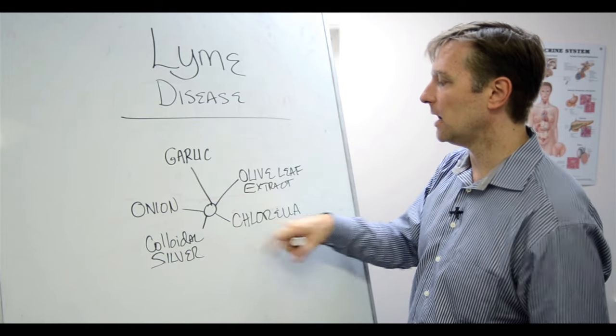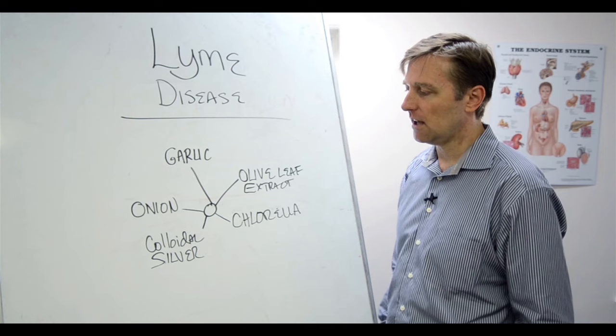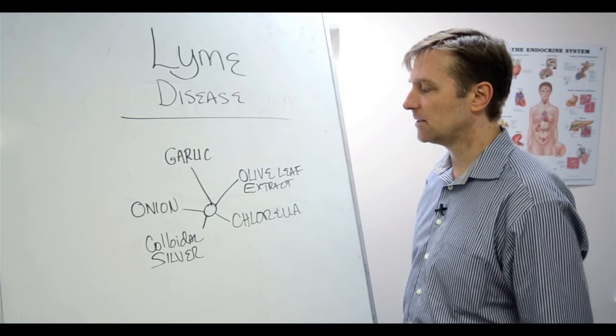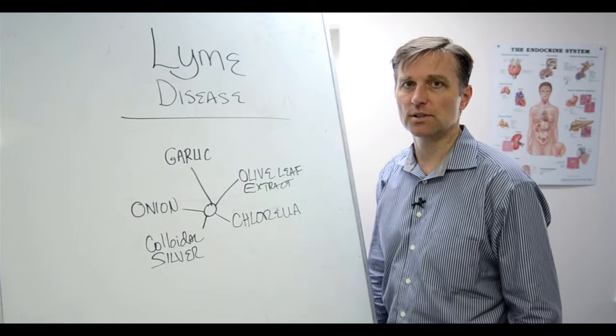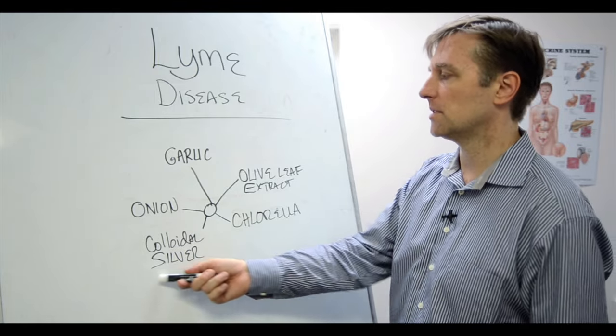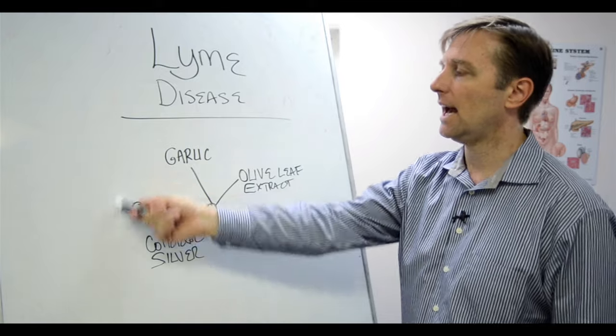And then chlorella, which is an algae that has a lot of healing properties with chlorophyll and detoxification properties. So I took some of that. And then colloidal silver, which is also good for the immune system. This is the combination that I did.